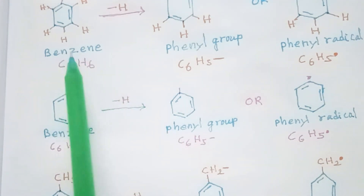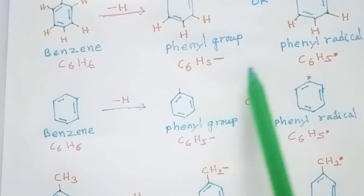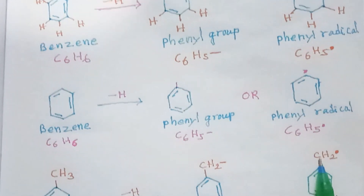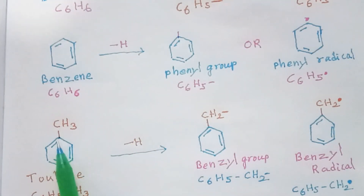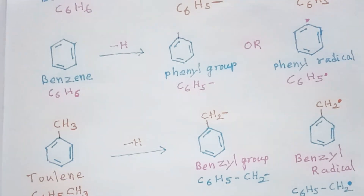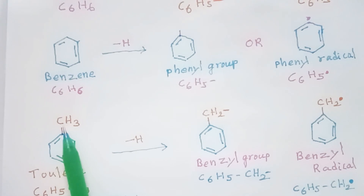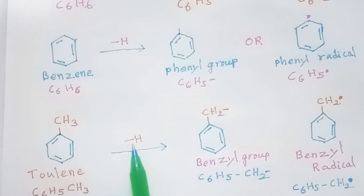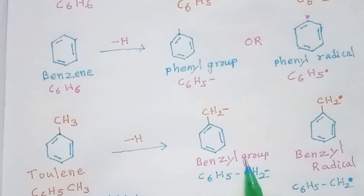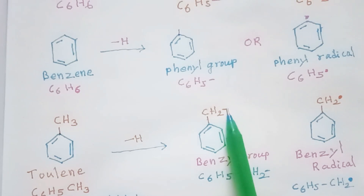This phenyl radical or phenyl group is called the aryl radical or aryl group. Now let's see a methyl-substituted benzene. Methyl-substituted benzene is called toluene or methyl benzene — its formula is C6H5CH3. When we remove a hydrogen atom from the methyl group, we get the benzyl group: C6H5CH2 with a free valence.